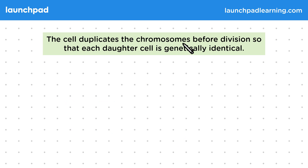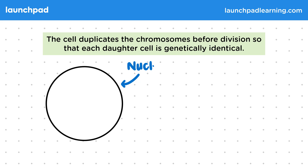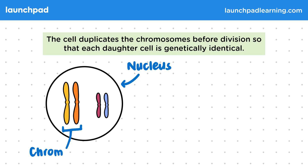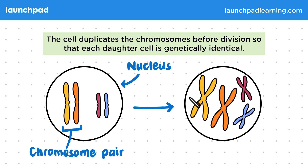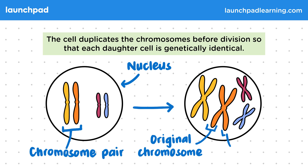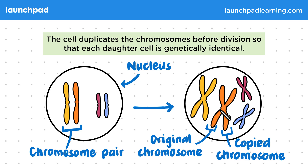The cell duplicates the chromosomes before division so that each daughter cell is genetically identical. This diagram shows a nucleus. Inside the nucleus, we have paired chromosomes — and this is one chromosome pair. Remember that in the human body there are 23 pairs of chromosomes. When the chromosomes are duplicated before division, the nucleus will look something like this. This part indicates the original chromosome, and opposite it is the copied chromosome. These two chromosomes are joined together by the centromere. Because each individual chromosome within the pair has been duplicated, when the cell divides, the daughter cells will be diploid, like the parent cell.